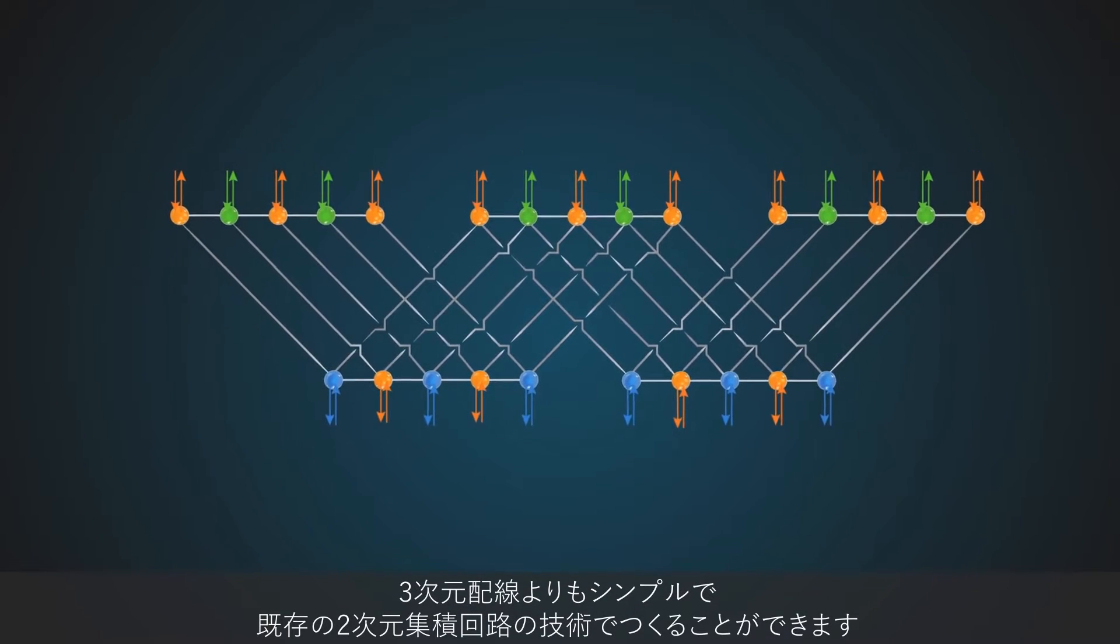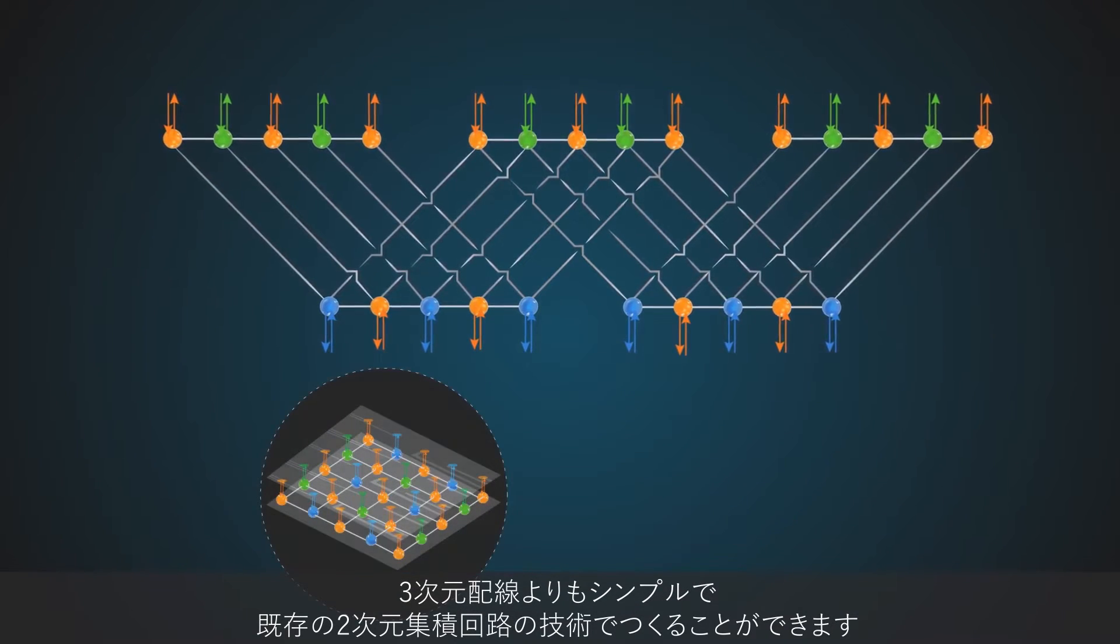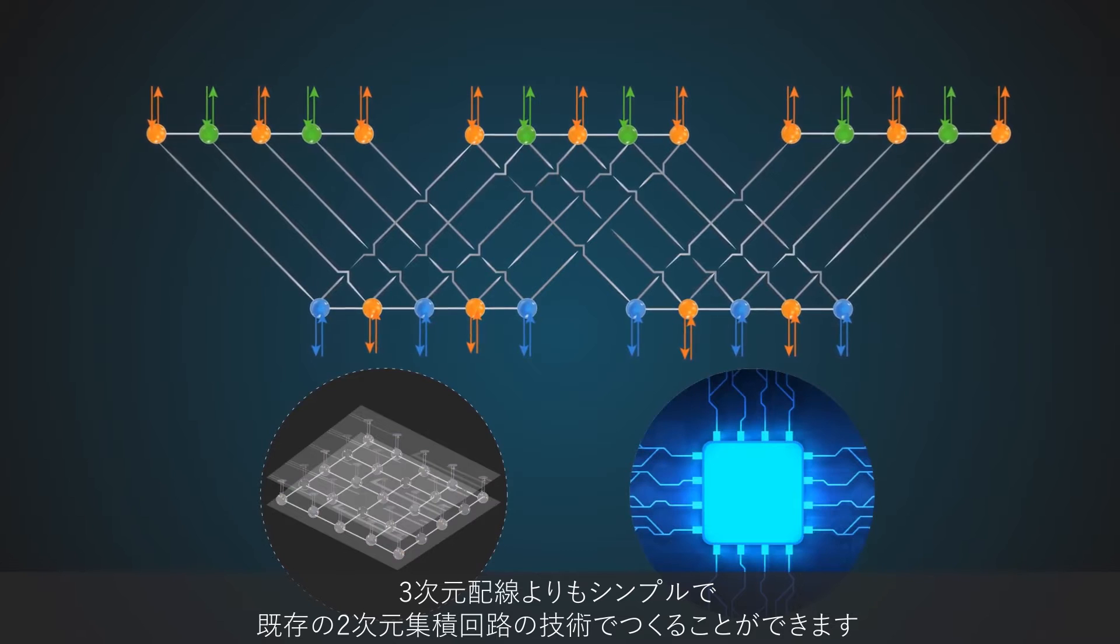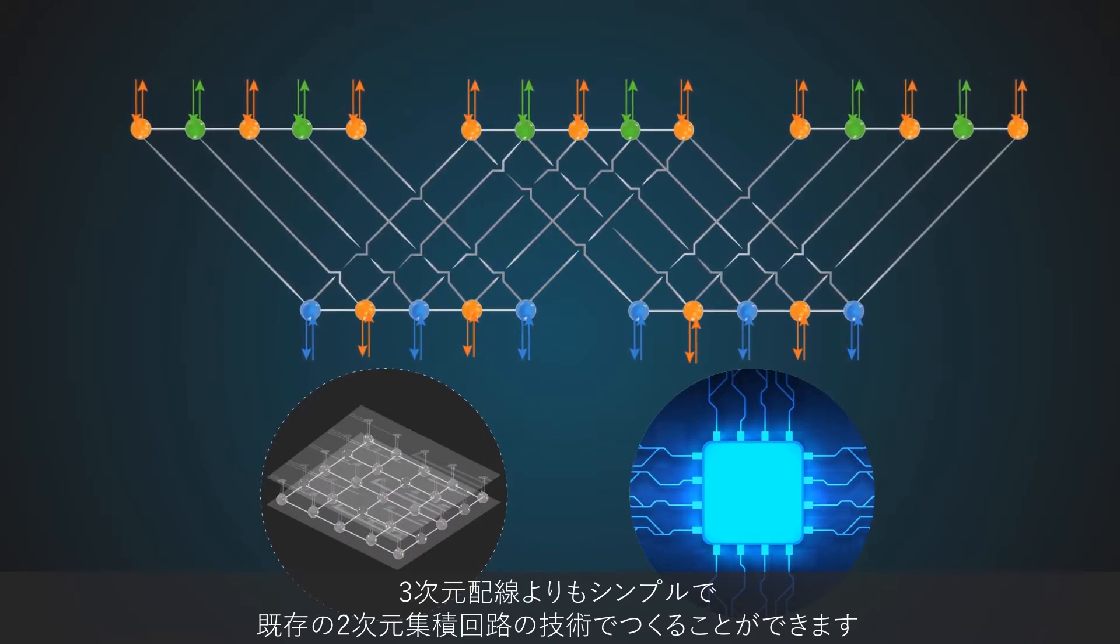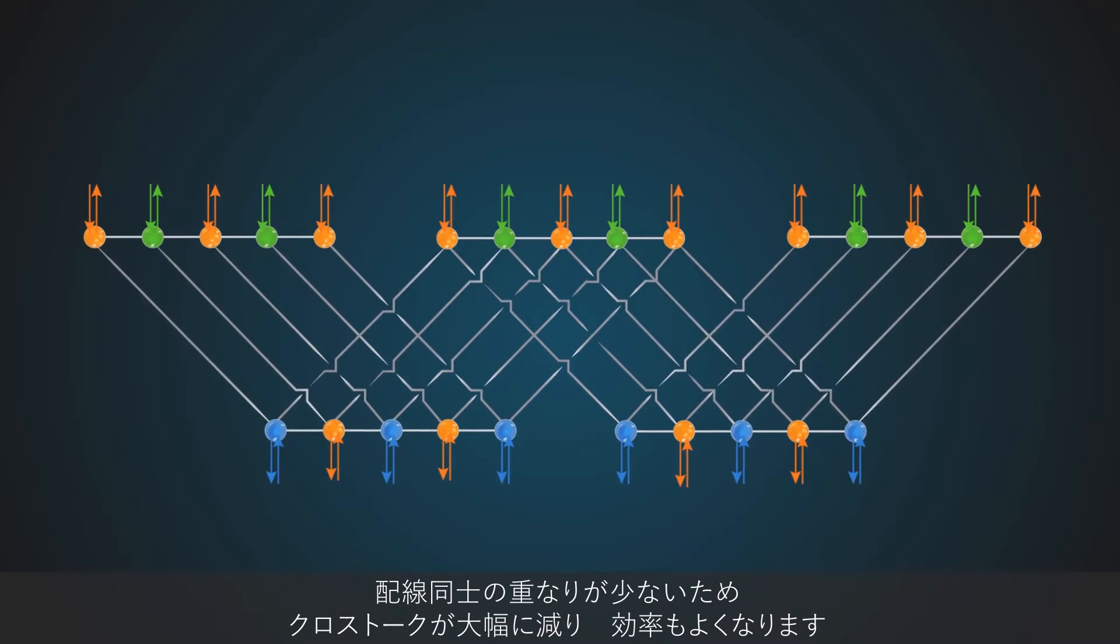This design is considerably simpler than 3D designs and can be constructed using existing 2D integrated circuit technology. Moreover, because there are fewer overlaps among wires, the crosstalk is considerably lower and efficiency is considerably higher in this system.